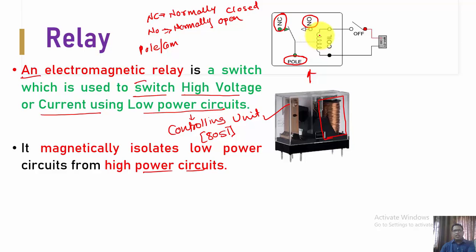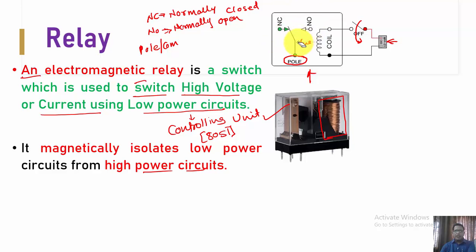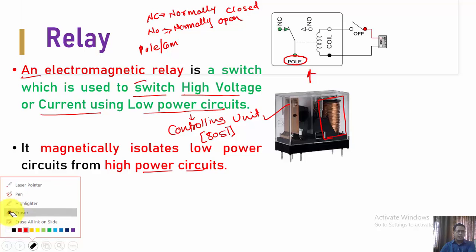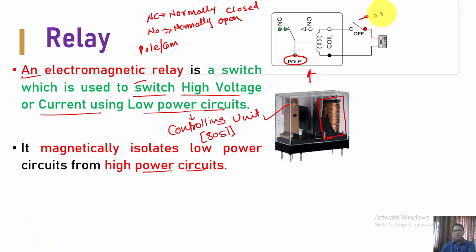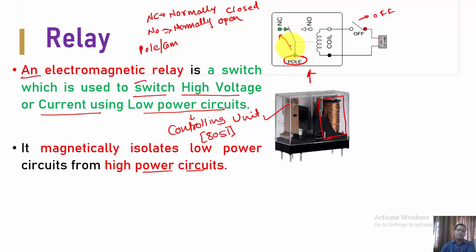We have a coil which we energize. When we give supply to this coil and close the switch, the coil gets energized and causes this pole to switch its position from normally closed to normally open. By default, when the switch is in the off state, this pole is connected to the normally closed terminal. The moment we close the switch — when the switch is on — the coil gets energized, generates a magnetic field, and the pole changes its position from normally closed to normally open.